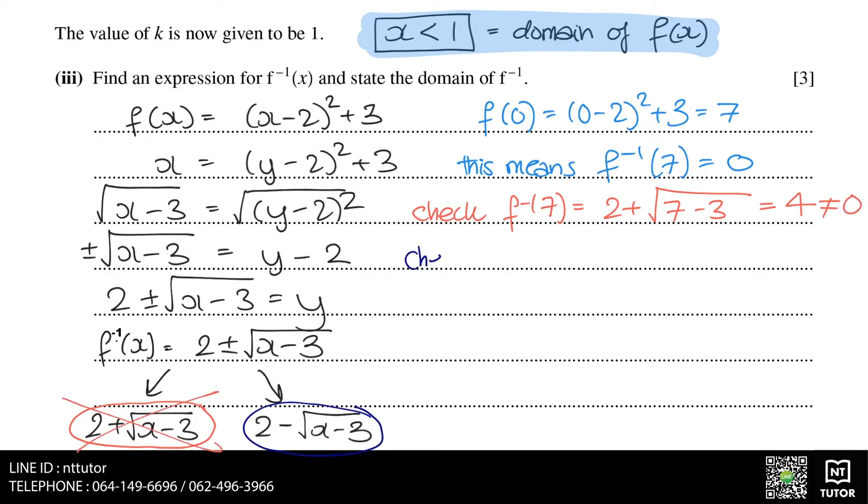If we substitute 7 into the other version, which is 2 minus the square root of (x - 3), it gives us 0. Therefore, this is the version of the inverse function for this question, and the inverse function equals 2 minus the square root of (x - 3).